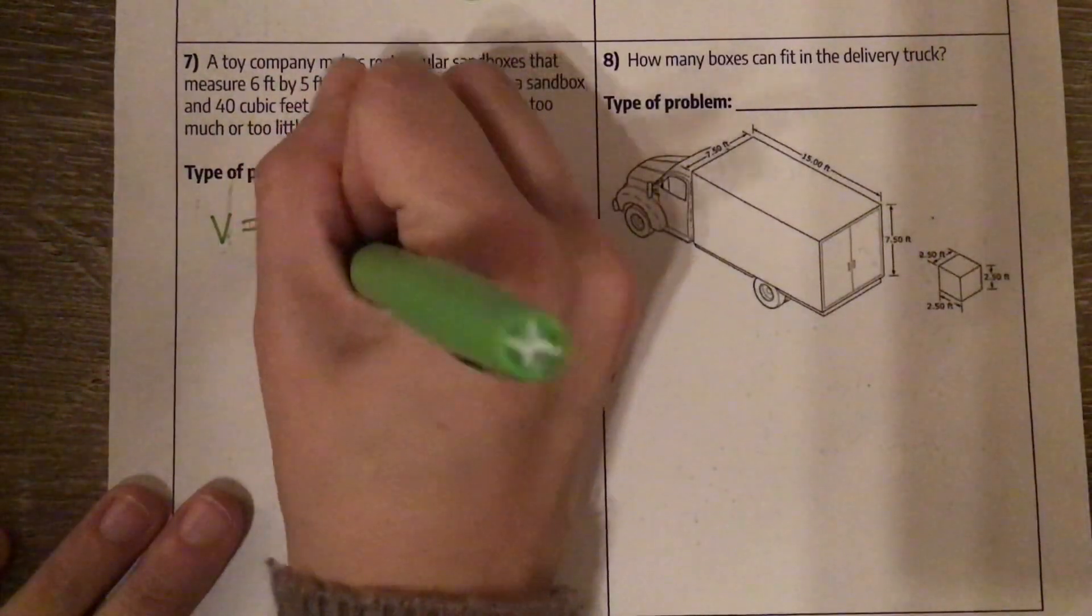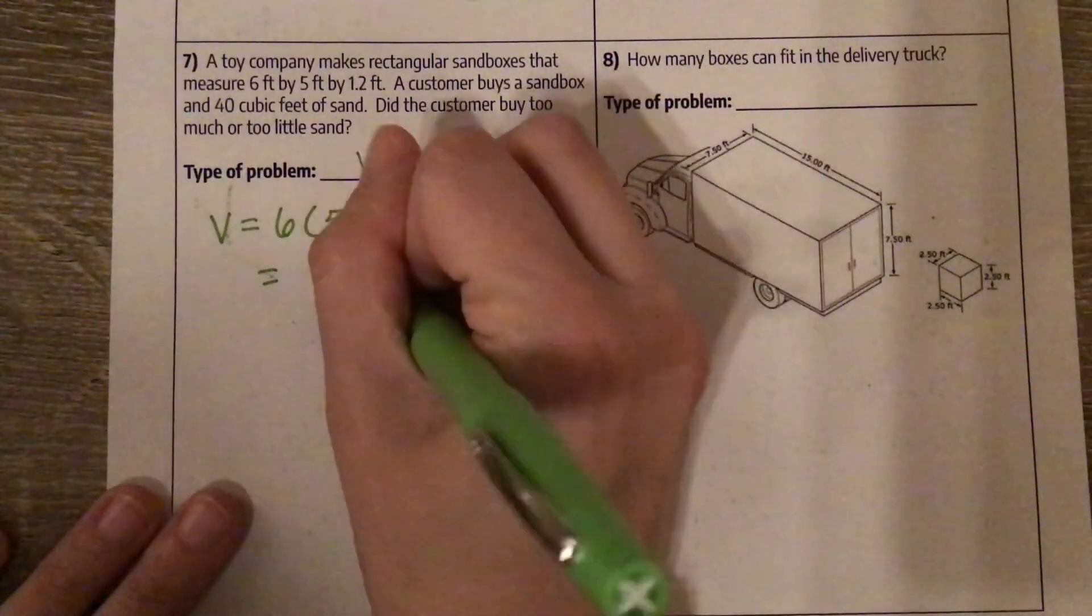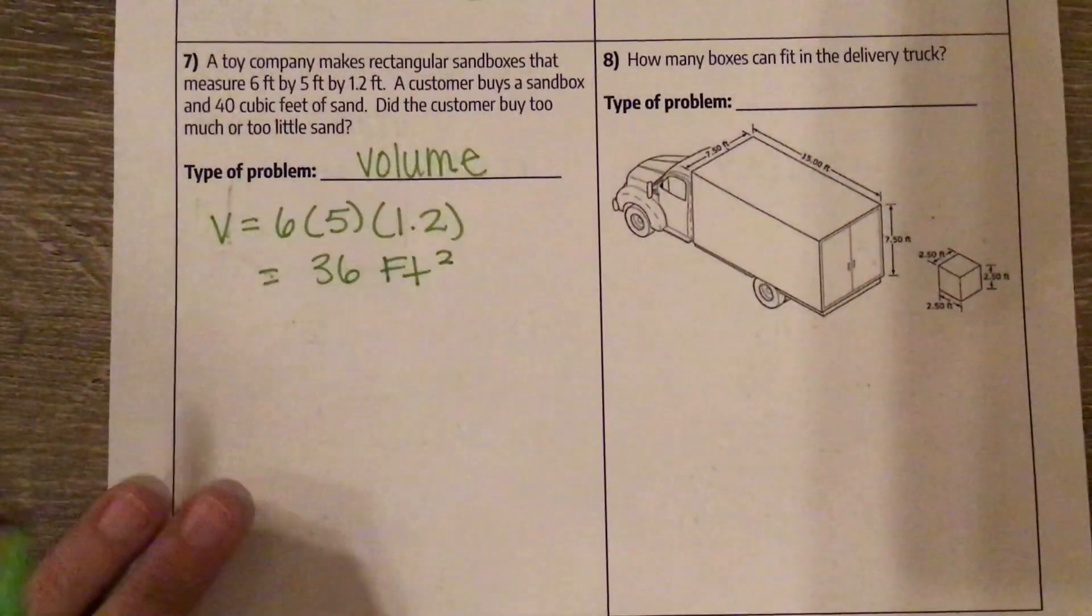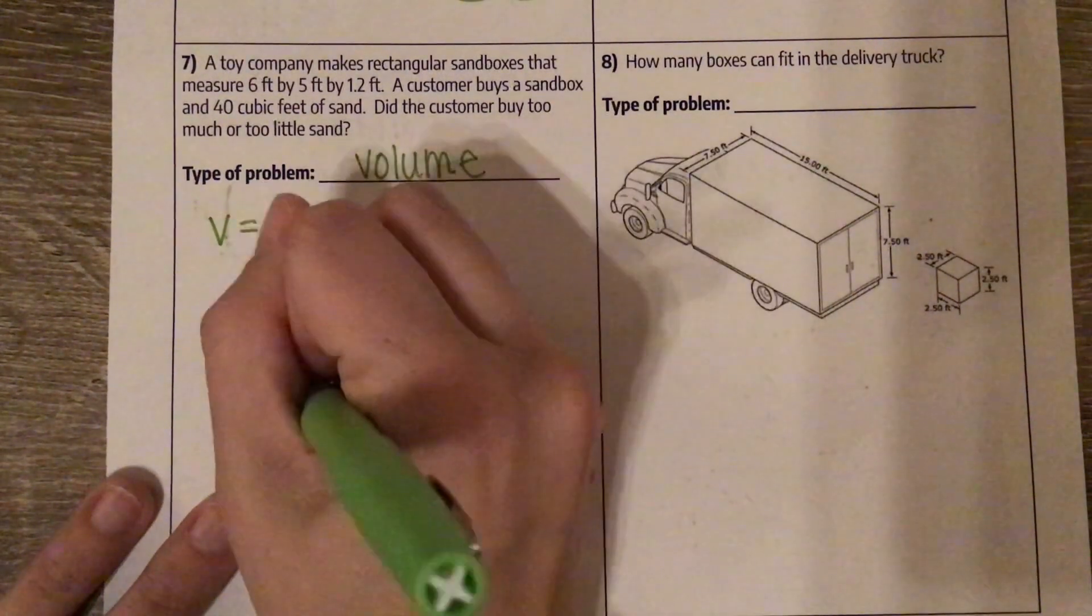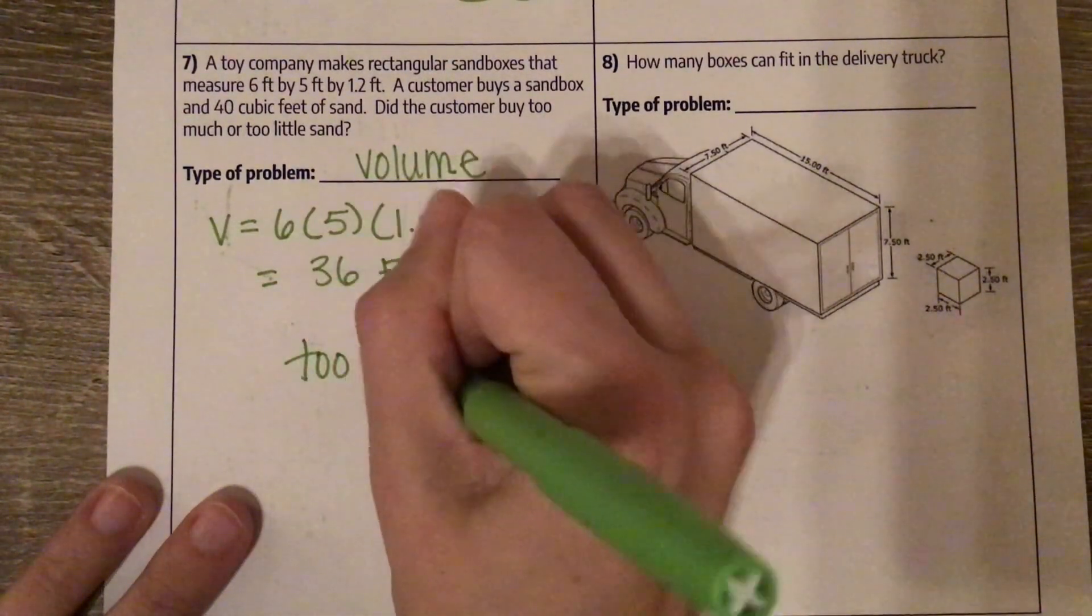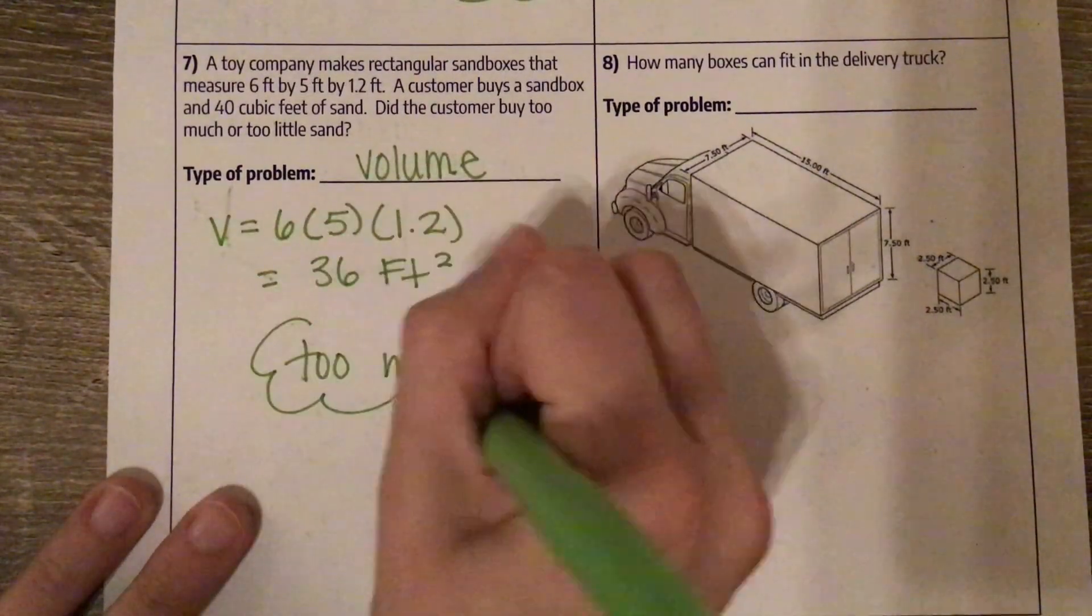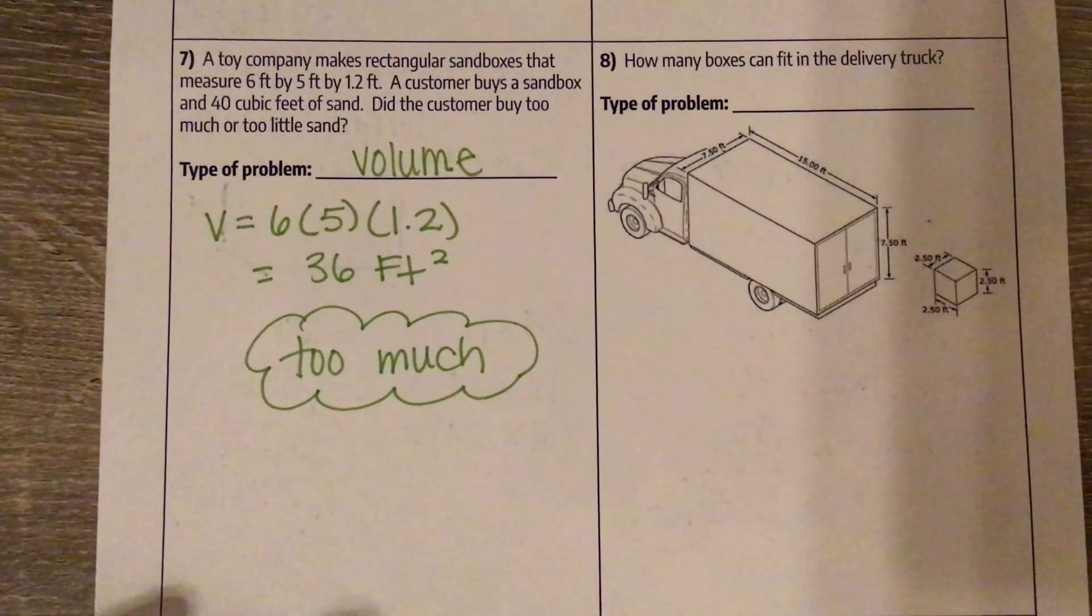And that gives me 36 feet squared. The customer bought 40 cubic feet of sand, so too much. But really, in reality, it's better to have too much than too little.